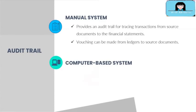In a manual system, the audit trail can go from source documents to the general ledger and financial statements — that is what you call tracing, from the source document to the financial statements. Vouching can also be made from the ledgers back to the source documents, where you start with the financial statements or general ledgers and pull out the supporting documents for them.